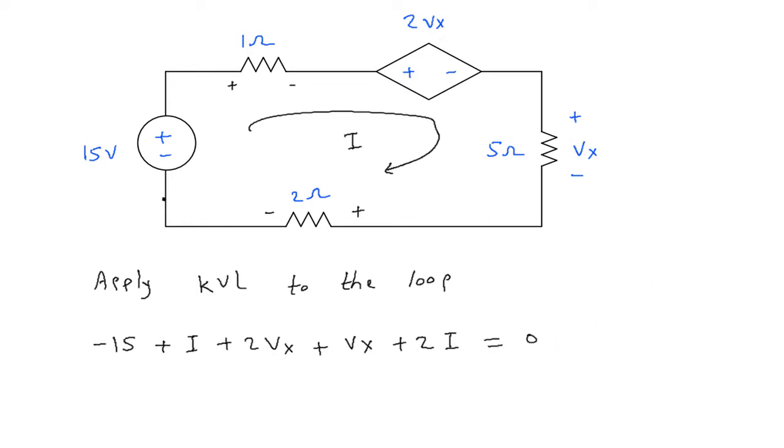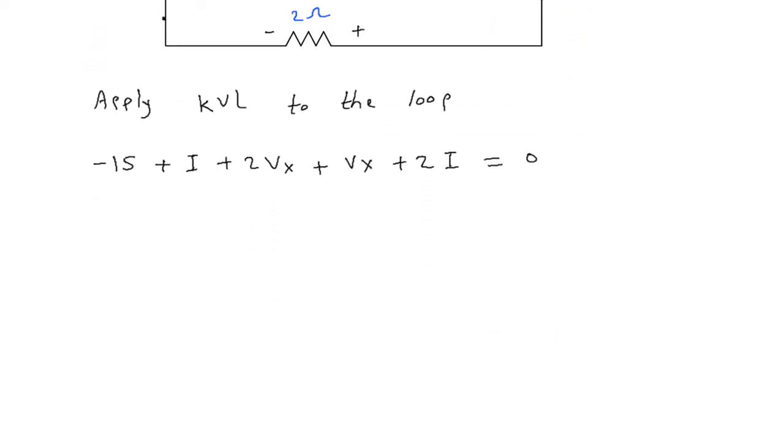So this will be minus 15 plus 3i plus 3Vx is equal to 0.